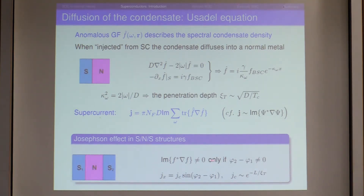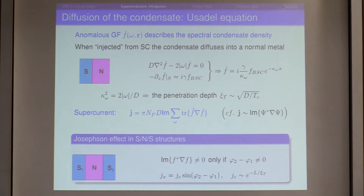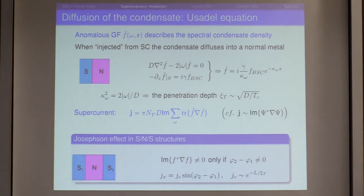The penetration depth is inversely proportional not to T_c exactly, but to the Matsubara frequency, which is simply proportional to T_c — so temperature-dependent. If we have two superconductors with different phases, we have the Josephson supercurrent flowing through the system with a critical current proportional to an exponential decay over the distance between the superconducting electrodes divided by the penetration depth.